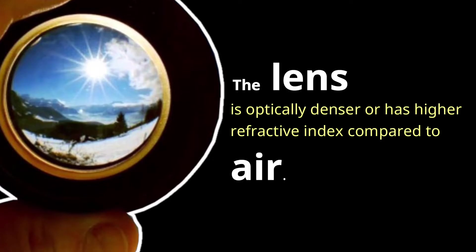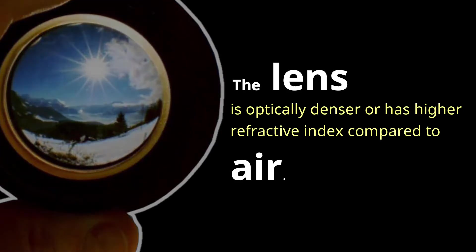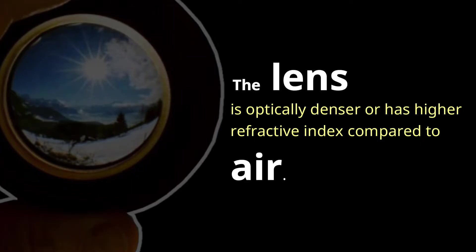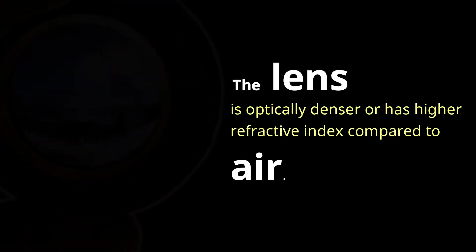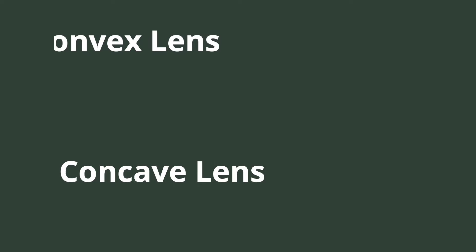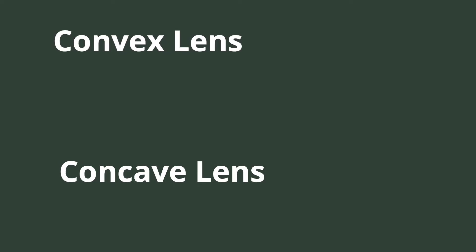Remember that the refraction of light rays happens whenever they travel from one medium to another with different optical densities. The lens, made of glass or plastic, is optically denser or has a higher refractive index compared to air. There are two types of lenses: convex lens and concave lens.